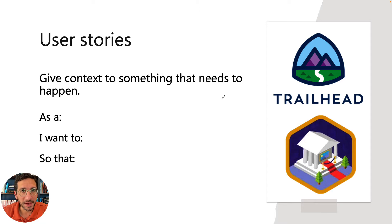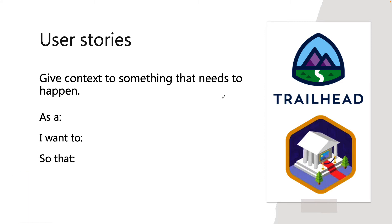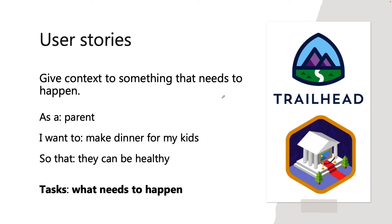User Stories give context to something that needs to happen, and they usually follow this format: 'As a blank, I want to blank, so that blank.' So that might be, as a parent, I want to make dinner for my kids so that they can be healthy and full and go to bed and sleep through the night. And then the tasks I would list out would be associated with that — like, to make a dinner.